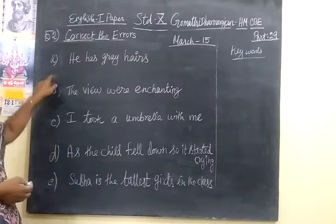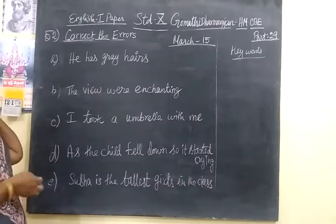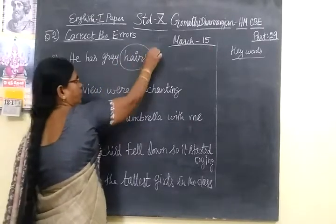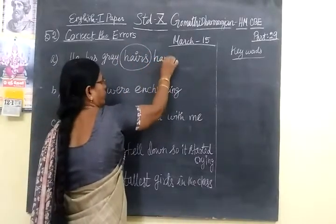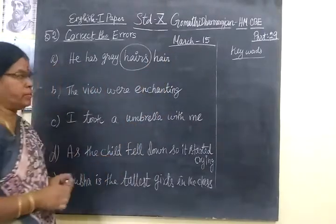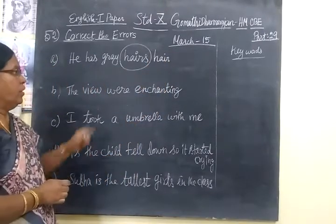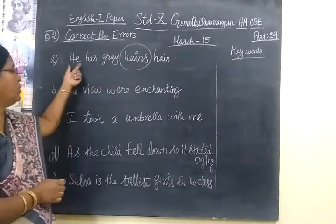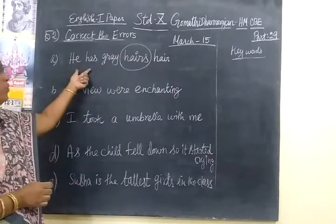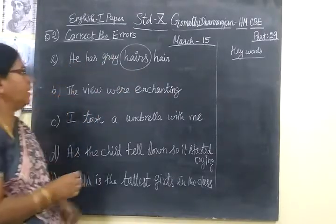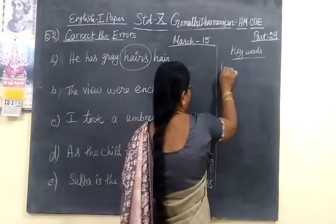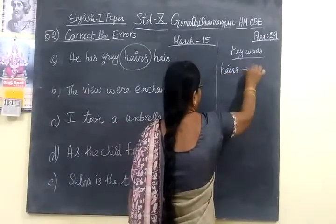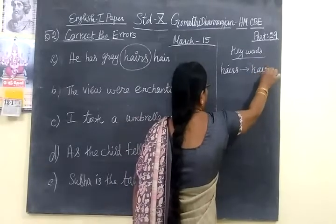First question A: 'He has great hairs.' Here, 'hairs' is wrong — hair is an uncountable noun like 'furniture,' so no plural form. Instead of 'hairs,' you use 'hair' only. The correction is: 'He has great hair.' The keyword here is 'hair.'